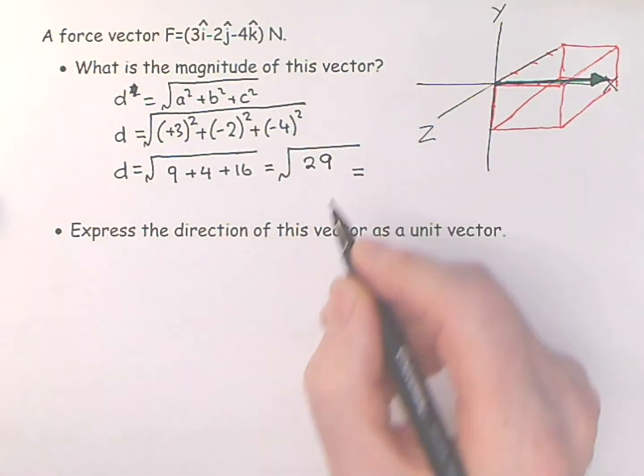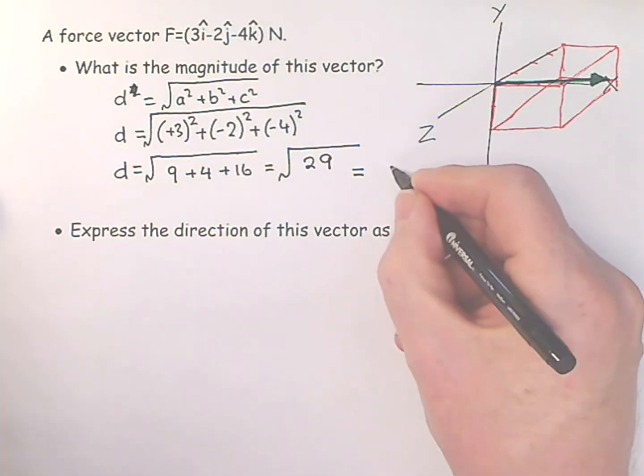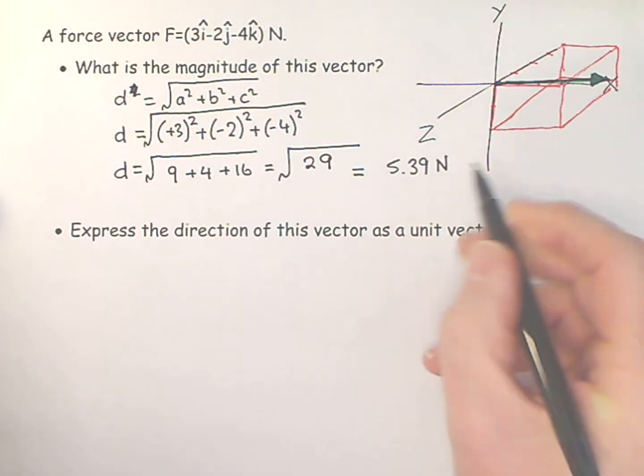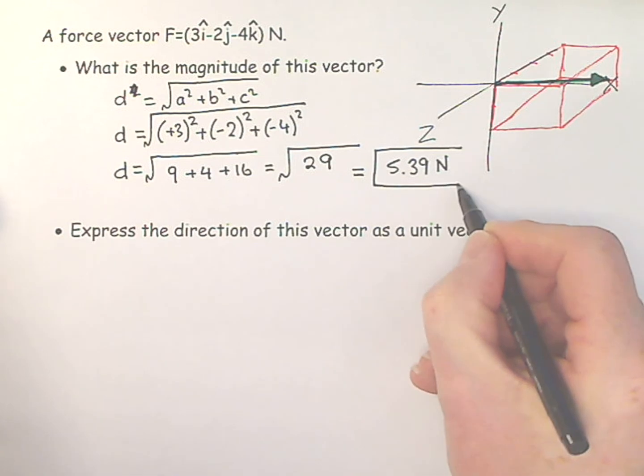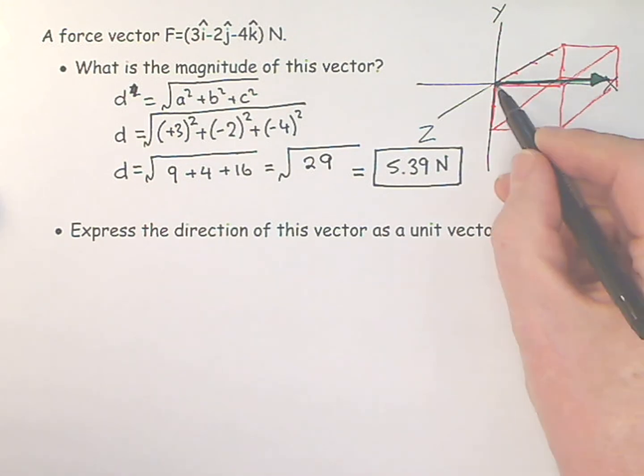And if I get my calculator, the square root of 29 equals 5.39. And this is in newtons, 5.39 newtons. No need for a sign on this because it's a magnitude. This is a magnitude, and they're always positive. So that's how long this actual vector is.